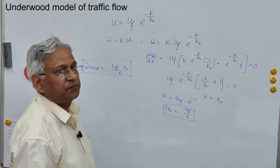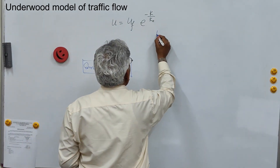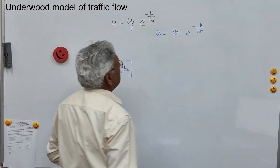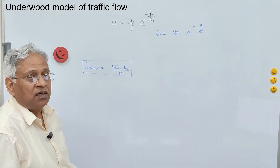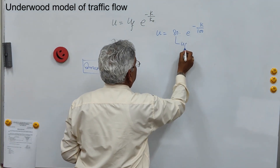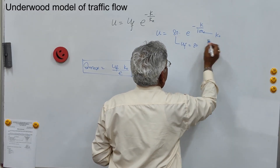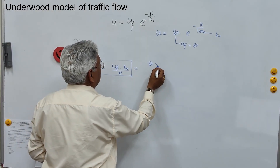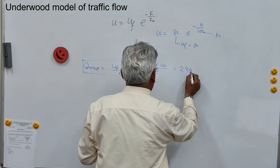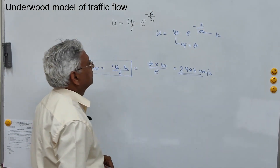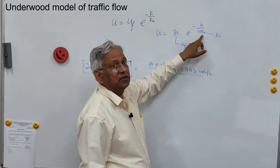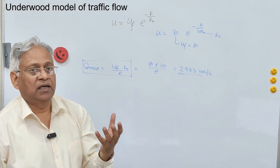The maximum flow, or capacity, is q_max equals uf times k0 upon e. For example, given u equals 80 times e to the power minus k upon 100, the free flow speed uf is 80 km/h and the optimum density k0 is 100 vehicles/km. Therefore capacity equals 80 times 100 upon 2.713, which is 2943 vehicles per hour. You can find speed at any density using this equation, but it is not valid for very high density conditions.